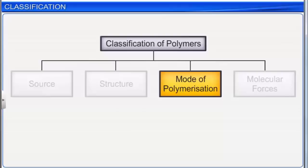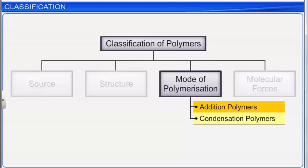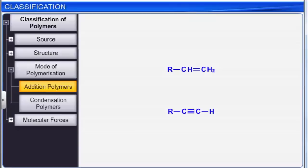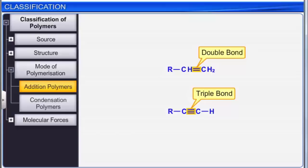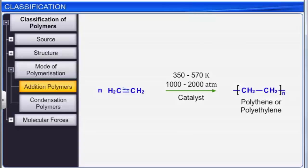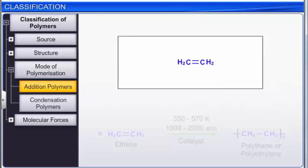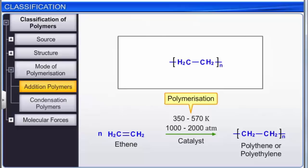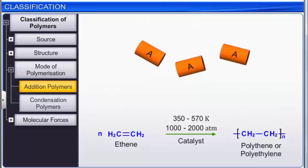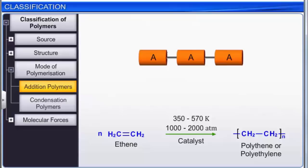On the basis of mode of polymerization, polymers are classified into two categories: addition polymers and condensation polymers. Addition polymers are formed by the repeated addition of monomers containing double or triple bonds; the reaction involves breaking of pi bonds. Addition polymers are sometimes referred to as chain growth polymers. For example, ethene contains a carbon-carbon double bond; when polymerized, it forms polyethylene, which has all single bonds. Addition polymers obtained from the polymerization of a single monomer are referred to as homopolymers. Polythene is a homopolymer.